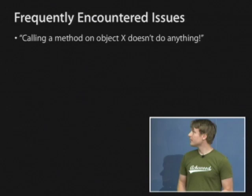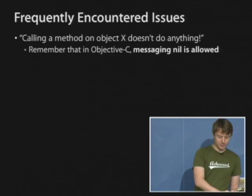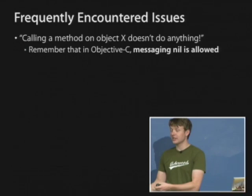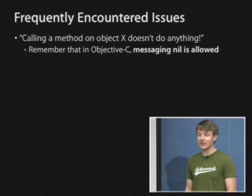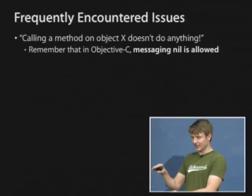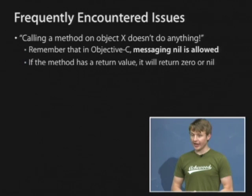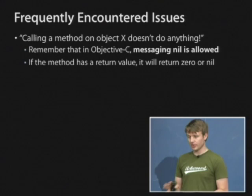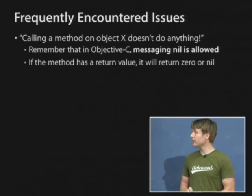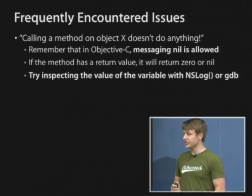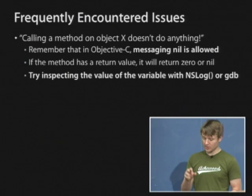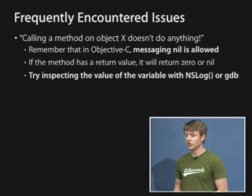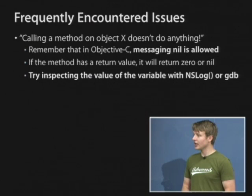There are a lot of cases where messaging nil is really useful — it helps you avoid writing repetitive code like 'if not nil, do this.' If a method has a return value like a Boolean, integer, or string, it'll return zero or nil. So if you're calling set text and the text comes back nil, the object is probably nil. Use the debugger or NSLog to print out the object. This will give you a hint as to whether messaging nil is what's tripping you up.